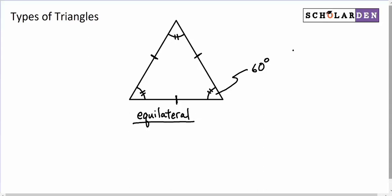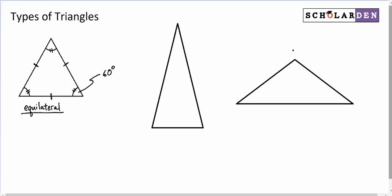So equilateral. Let's move that off to the side and talk about the next type of triangle. The next type is called an isosceles triangle. I drew two of them because they can come in different shapes. The important thing to know about isosceles triangles is that two of the sides are the same and two of the angles are the same. And you'll notice it's these two angles which are called base angles.